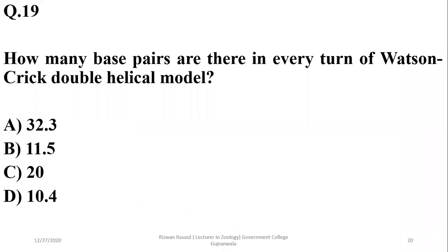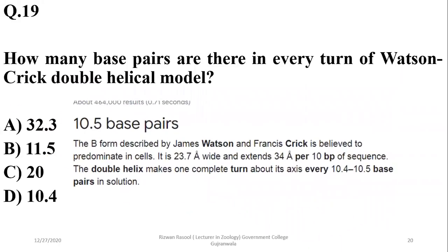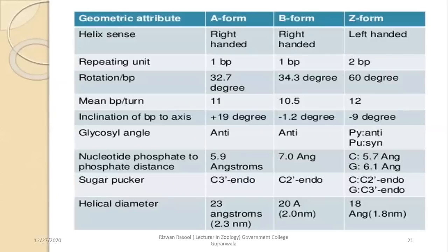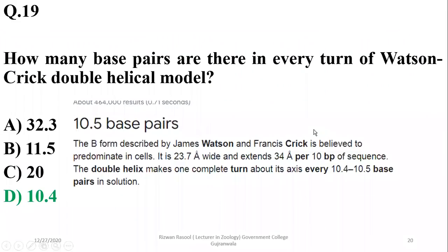Question 18: How many base pairs are there in every turn of the Watson-Crick double helical model? This refers to the B form of DNA. There are three forms of DNA: A, B and Z. The B form exists with 10.4 or 10.5 base pairs per turn in solution. If the question asks for bases, choose 20; if base pairs, choose 10.5 or 10.4. So delta is the right option.